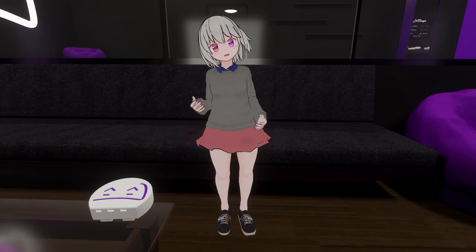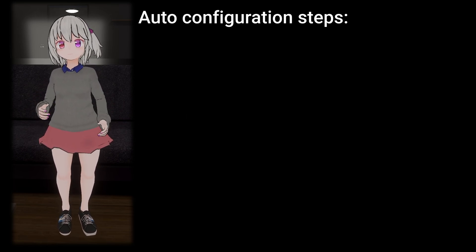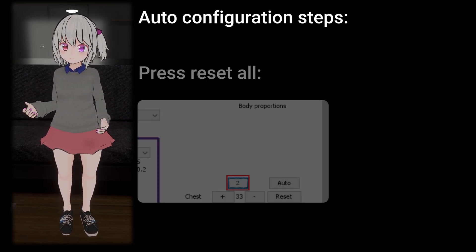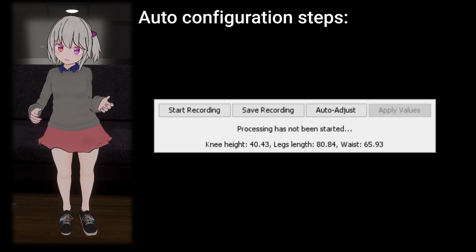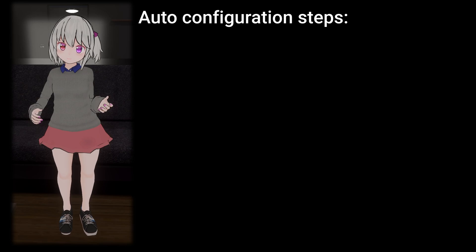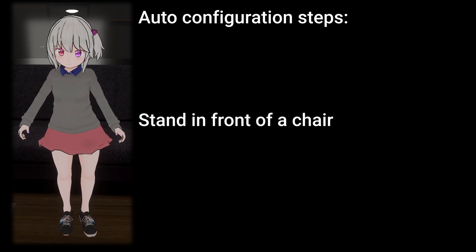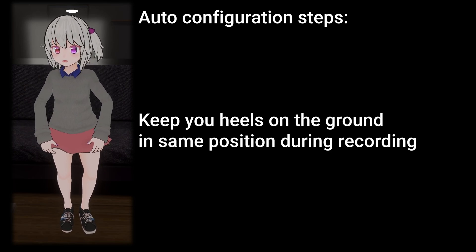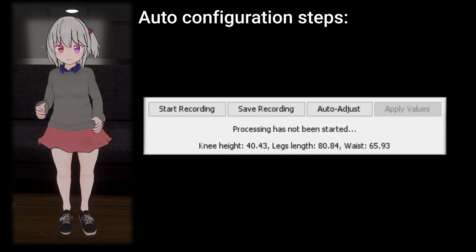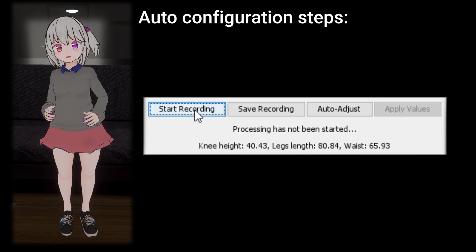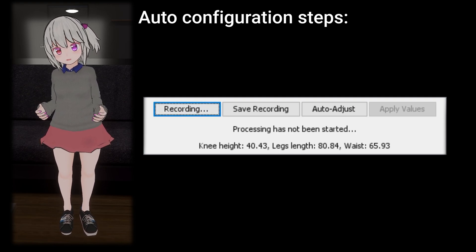To use Auto Configuration, follow these steps. Stand straight forward. Press Reset All. Press the Auto button to open the Auto Configuration window. Stand in front of a chair. Keep your heels on the ground in the same position during recording. Press Start Recording on the Auto Configuration window. The text on the button will change to indicate that recording has started.